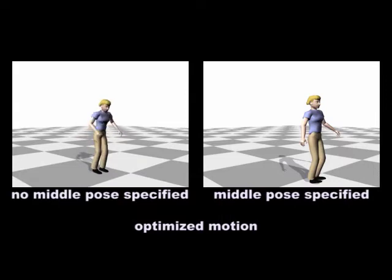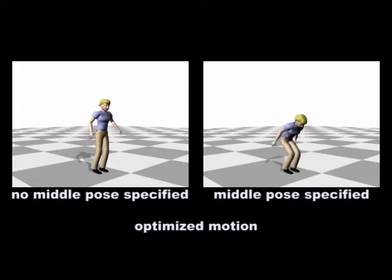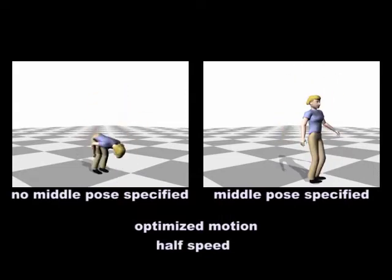Specifying additional constraints on the motion allows finer control over the details of the motion. In the example on the right, the user controls the pose in the middle of the flip.